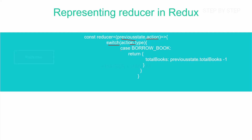We match for the cases. If the case is 'borrow book', then I will be returning the total books from the previous state minus 1 — that is, previous state dot total books minus 1. My previous state is 10, I am having 10 books. Now I borrow a book, so 10 minus 1, and my new updated state will be 9.